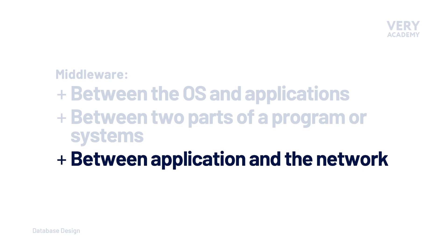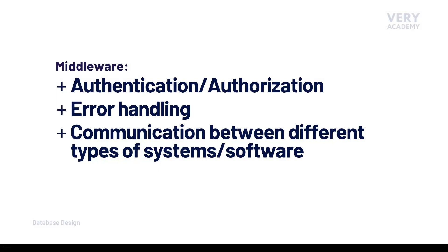This intermediate layer of software — middleware — enables a range of communication and data management possibilities. The types of services that middleware might provide include authentication, authorization, error handling, and potentially communication between different types of systems or software.